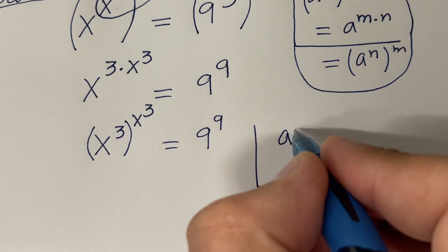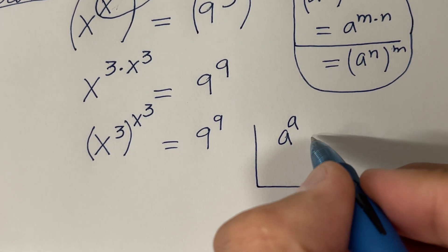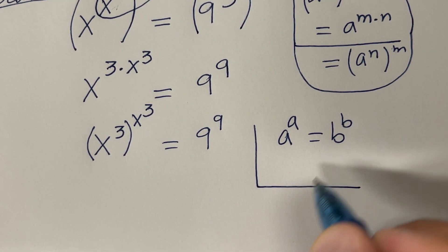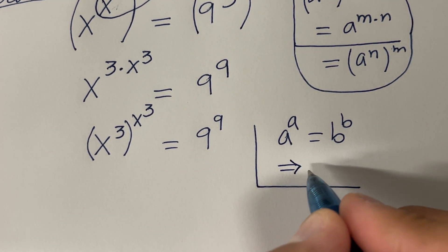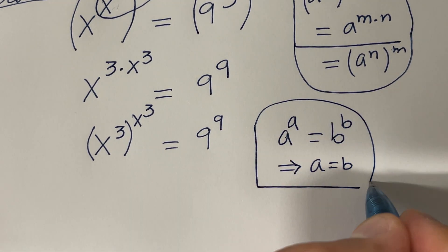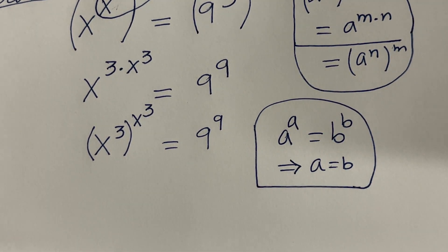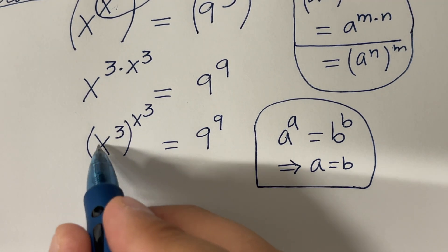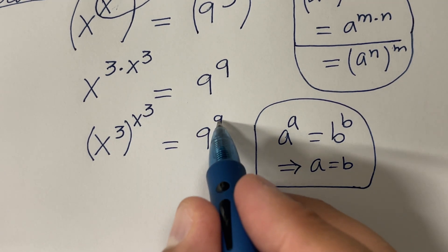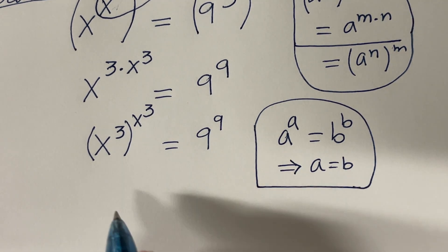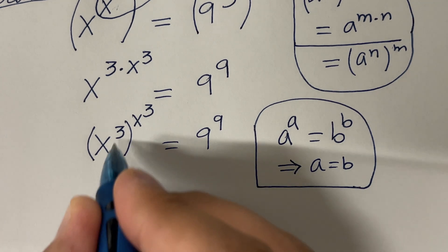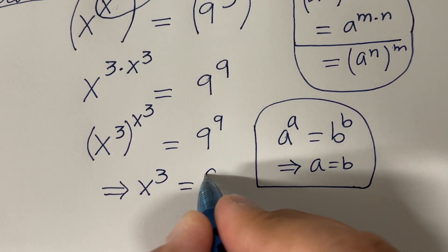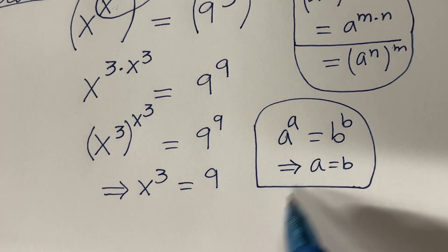The advantage now is we can use this property: a raised to the power raised to the same exponent equal to some other number p raised to the same exponent, then this property says a is equal to p. So if we look here, we have the same base raised to the same exponent equal to the same base to the same exponent. This means that x raised to the power 3 must be equal to 9 by using this property.